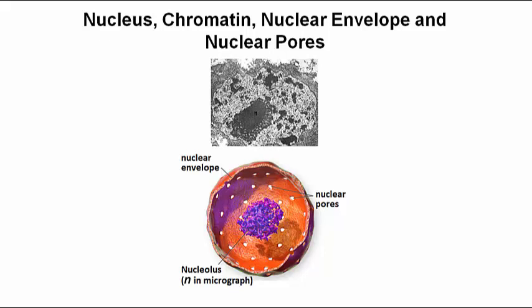The upper TEM shows what a nucleus looks like in situ, in place, in a cell. This is of course a cross-section of the cell.